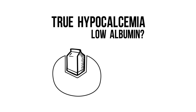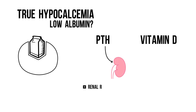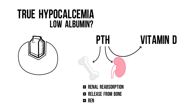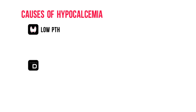Now let's assume we've checked for this and we're dealing with true hypocalcemia. Calcium is regulated primarily by parathyroid hormone and vitamin D. Parathyroid hormone stimulates calcium resorption in the kidney and calcium release from bone. It also stimulates renal production of active vitamin D, which increases gastrointestinal calcium absorption. That immediately gives us two main causes of hypocalcemia: low PTH and low vitamin D.